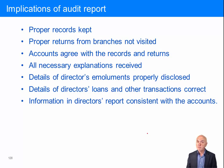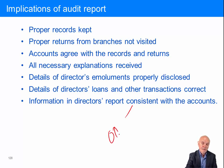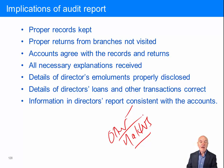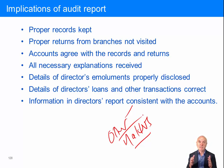Finally, the implications not mentioned in the audit report: that proper records have been kept, proper returns from branches not visited have been received, the financial statements actually agree with the records and returns and are not based on fiction, the auditors have received all explanations and information they need, directors' emoluments are properly disclosed, directors' loans and other transactions are correct, and information in the director's report is consistent with the financial statements. This is quite often where an 'Other Matters' paragraph comes in — if the director's report says the company has had a marvellous year but the financial statements show profit is actually lower than last year, you would draw people's attention to that inconsistency.